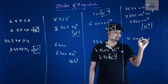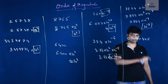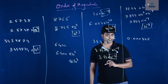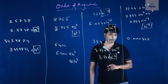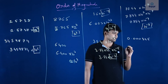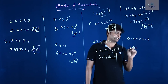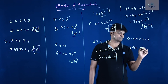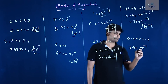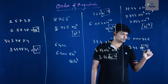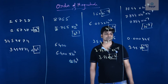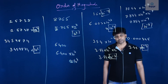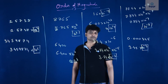Consider the number 0.000345. Calculate the order of magnitude. I convert it so there is only one digit before the decimal point: 3.45 × 10^-4. The leading digit is 3, which is less than 5, so the order of magnitude is 10^-4. This is how you can calculate the order of magnitude of any given number.